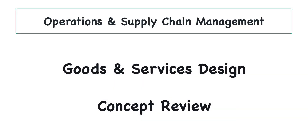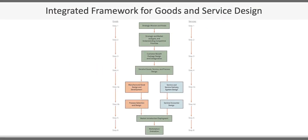This video provides an overview of the major topics covered in Chapter 5, Goods and Service Design. Chapter 5 starts out by introducing us to an integrated framework for goods and service design, which involves six major steps.